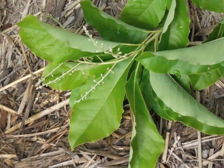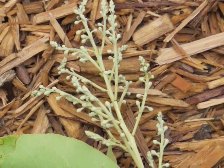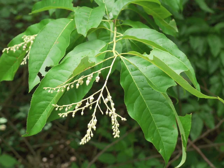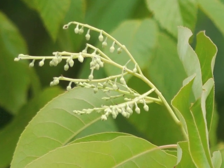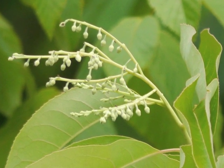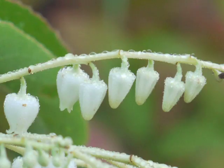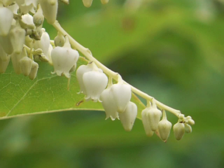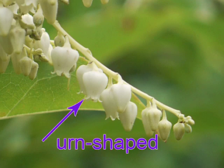On this small branch blown from a tree during a rainstorm, the white specks grow larger and start to look more like pointed buds hanging down from the stem. Notice how they grow along just one side of the stem. As the flower opens, it spreads out to reveal an urn-shaped flower.